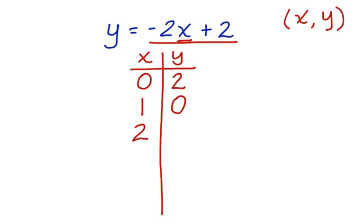Let's put 2 in. 2 times negative 2 is negative 4, plus 2 gives me a negative 2. Let's put 3 in. Negative 2 times 3 is negative 6, plus 2 is negative 4.